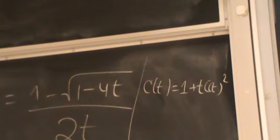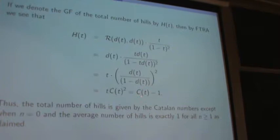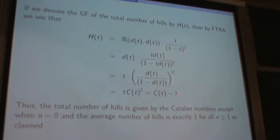From that, we notice that T times C of T squared is simply C of T minus one, and replacing that, we obtain the result that the total number of peaks among all Dyck paths of length 2N has generating function equal to just the Catalan number with the trivial case removed. That means the total number of peaks is given by the Catalan numbers except when N equals zero, and the average number of peaks, as expected, is equal to one.